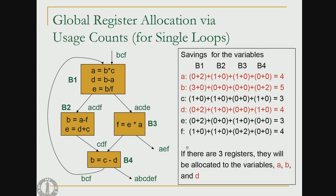Let us look at an example. Variables b, c, and f are live on entry to this loop. Along one path, a, c, d, and f are being used. So a, c, d, and f are live at one point; a, c, d, and e at another; c, d, and f at another; b, c, and f at another. Exiting from the loop, a, b, c, d, e, and f are live.